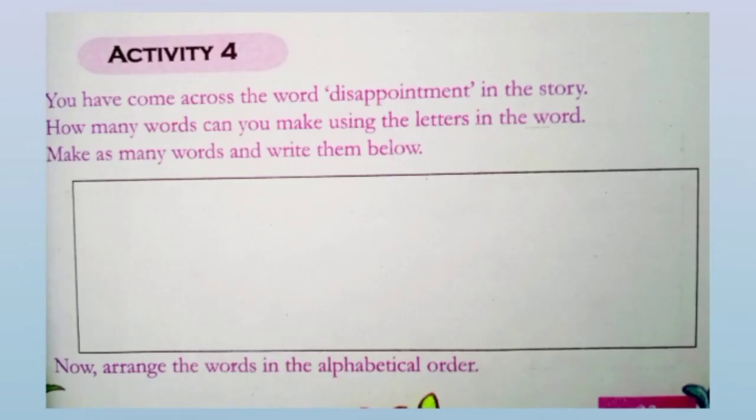Friends, take page number 23, Activity 4. You have come across the word 'disappointment' in the story. How many words can you make using the letters in the word? Make as many words and write them below, and arrange the words in alphabetical order. Disappointment.